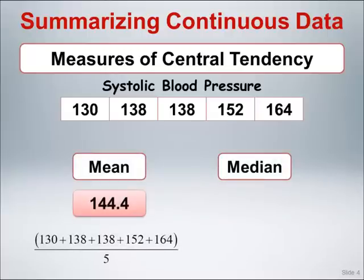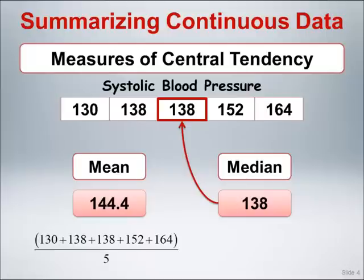The mean of these five numbers is 144.4 and is simply the sum of the observations divided by the number of observations, here 5. The median is calculated by sorting the observations in ascending order, which is already done here, and then selecting the middle observation, here a systolic blood pressure of 138.